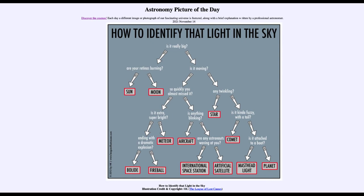Here we see everything from solar system objects like our sun, moon, and planets, to distant objects like stars, and things that are within our atmosphere that came from space such as meteors, objects above the atmosphere such as the International Space Station or other artificial satellites, and even things here on Earth such as an aircraft or the masthead light on a boat. So all of those might be different things that you happen to see in the sky, and here's a flowchart that can help you in a humorous way better identify those objects.